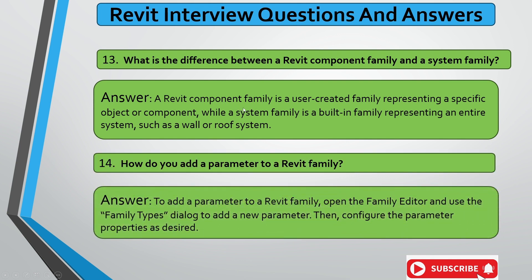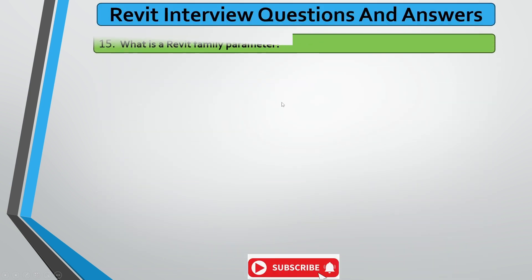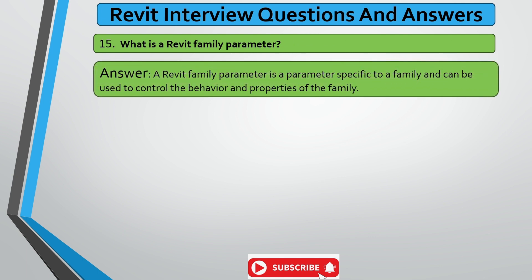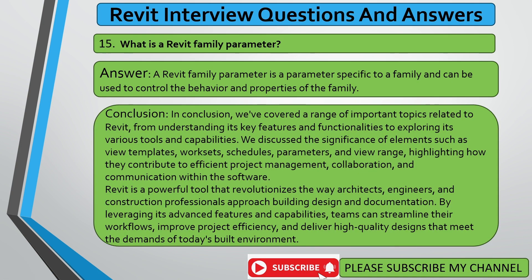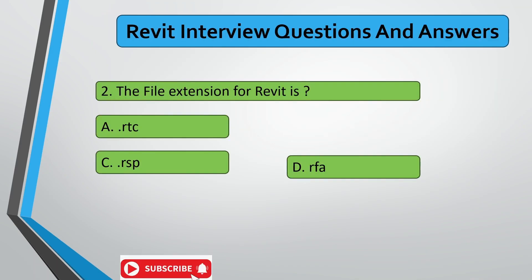How do you add a parameter to a Revit family? To add a parameter to a Revit family, open the family editor and use the Family Types dialog to add a new parameter, then configure the parameter properties as desired. And what is a Revit family parameter? A Revit family parameter is specific to a family and can be used to control the behavior and properties of that family.